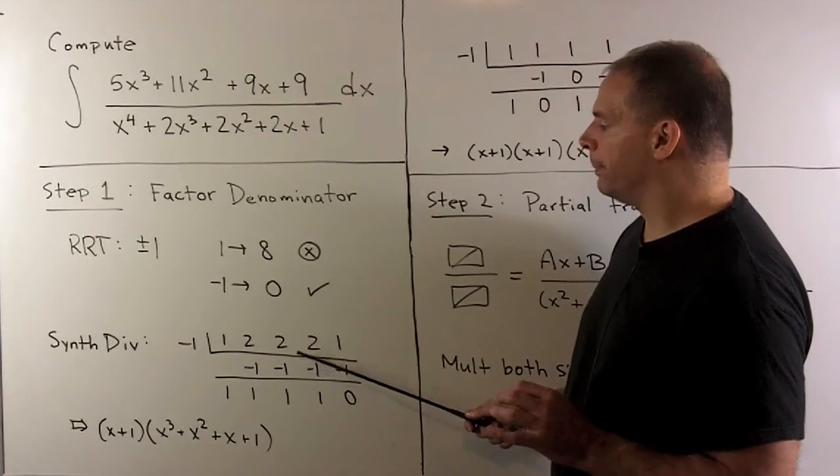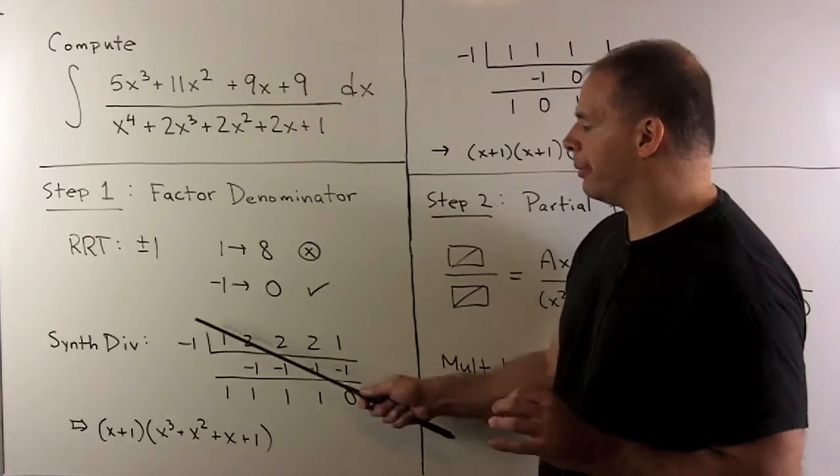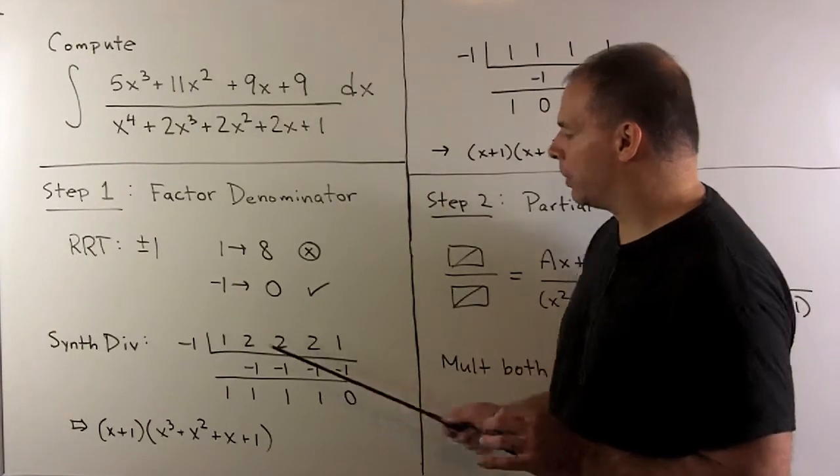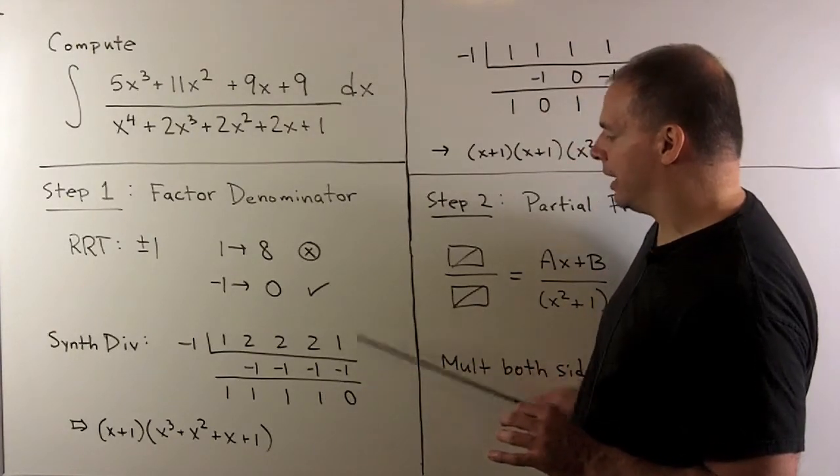Multiply over to the middle. Add again, we get 1. Multiply over to the middle, and then we get a 0.